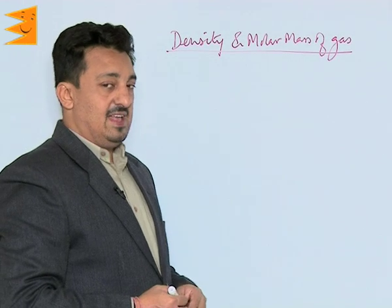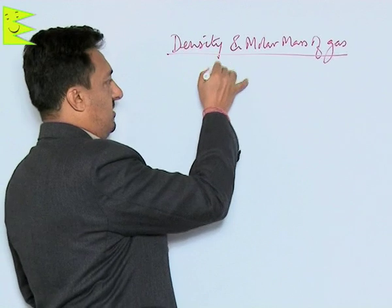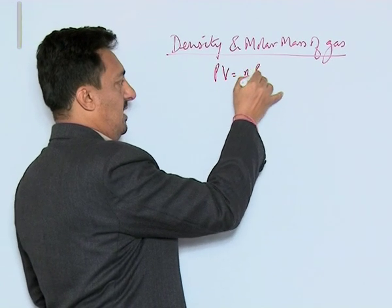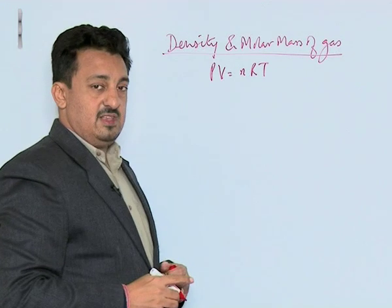After understanding the ideal gas equation or the combined gas laws formula, which is PV equals nRT, let us derive a formula for the density of a gas.